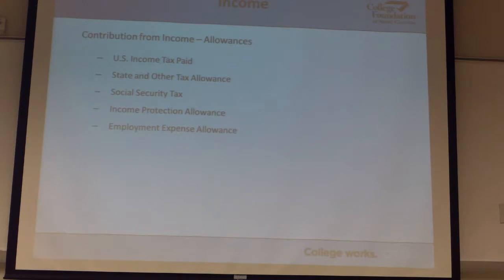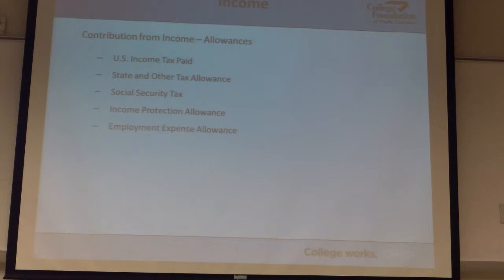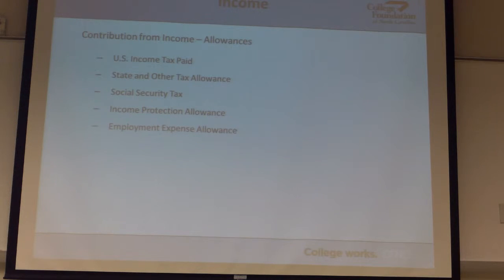With the income protection allowance that I talked about, from this market basket of goods, we pull that out and say we know you have living expenses and this is what we are protecting. What the income protection allowance does — and this is true on both the federal and the IM side, even though the amounts are a little bit different — is it's designed to protect the things that you don't have discretion about, which means different things to different people.